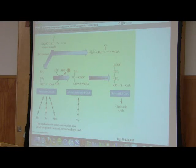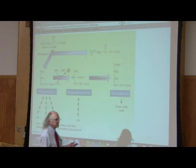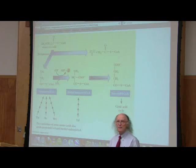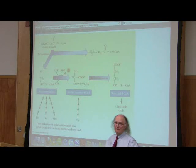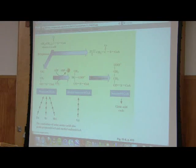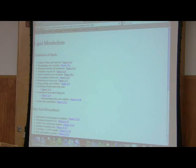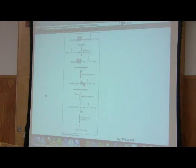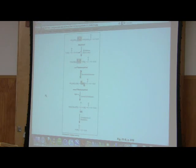Succinyl-CoA can then go to the citric acid cycle and get oxidized. The significance here is that this rearrangement requires vitamin B12. One of the reasons you need vitamin B12 is to do this rearrangement to handle odd-chain fatty acids. You need vitamin B12 for other things, but this is a very important one. Vitamin B12 is the only compound in our body, at least to my knowledge, that contains cobalt. Okay — unsaturated fatty acids — we've got a problem, we're out of time. We'll do it tomorrow.